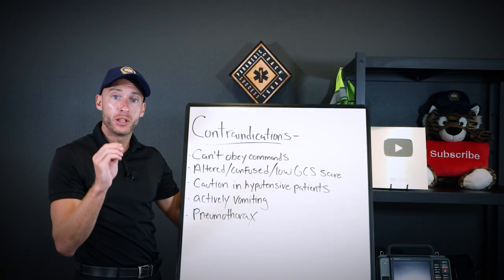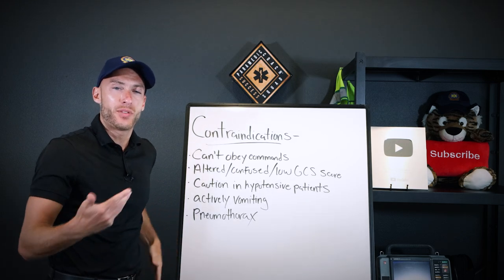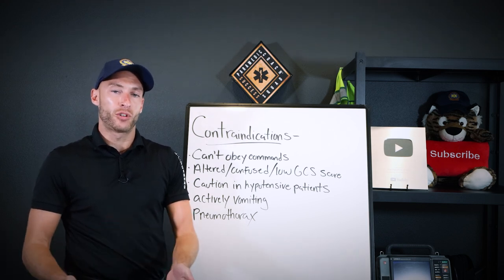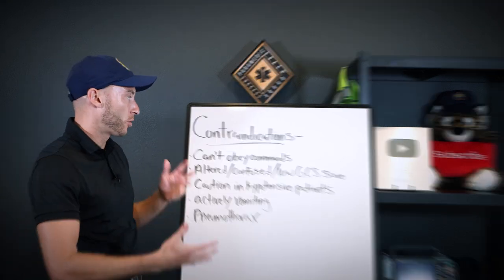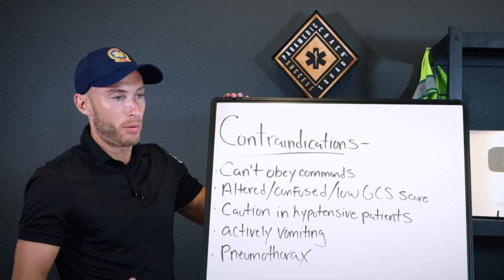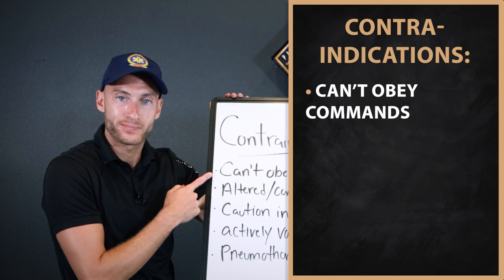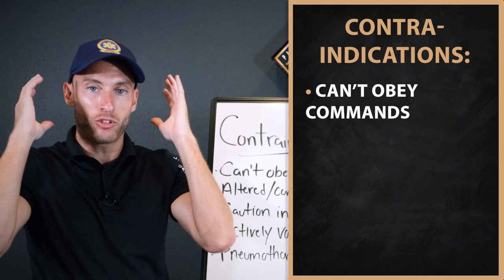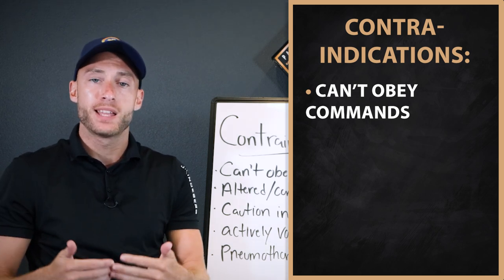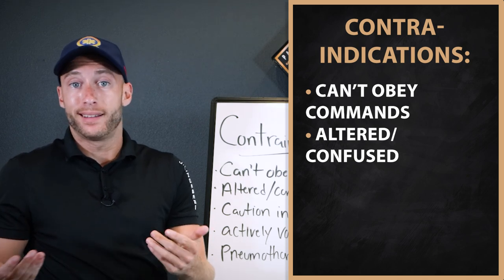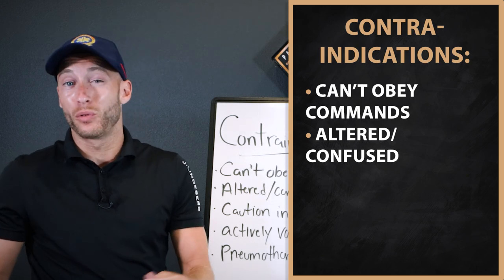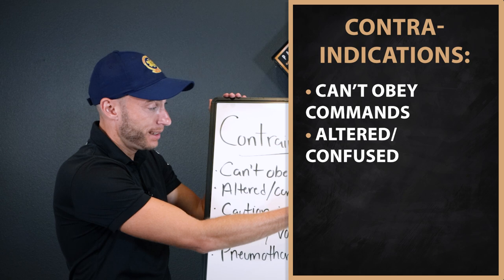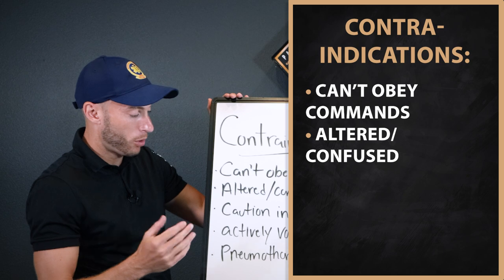Now here are the contraindications — when we will not be using CPAP. If oxygen devices like nasal cannula and non-rebreather have failed completely, we need to control and manage the airway for them instead. The first contraindication is they can't obey commands. There's coaching required when putting the CPAP mask on the patient, and it can be frightening. If they're altered mental status, confused, or have a low GCS — only responsive to voice or painful stimuli — CPAP won't work.